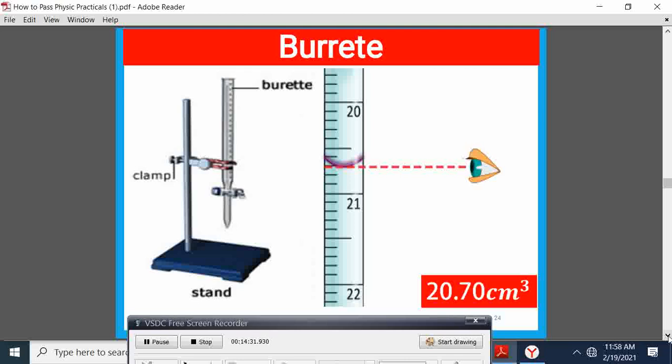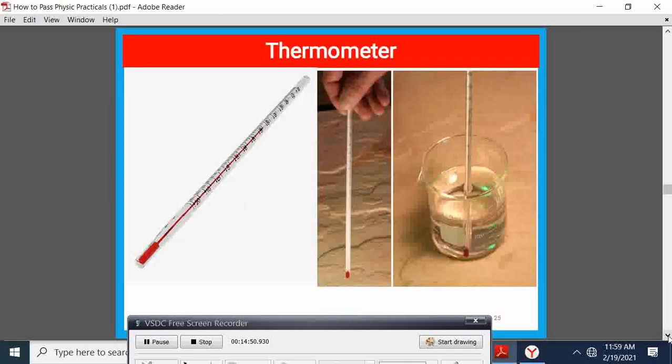The burette accuracy is to sometimes one decimal place, but if you want to include the second decimal place, it must be either 0 or a 5.